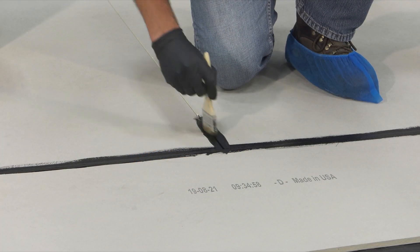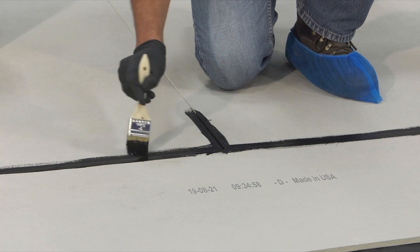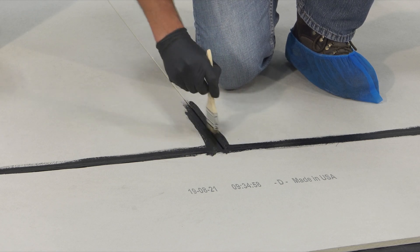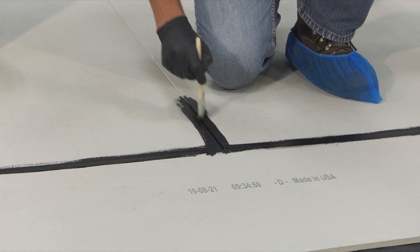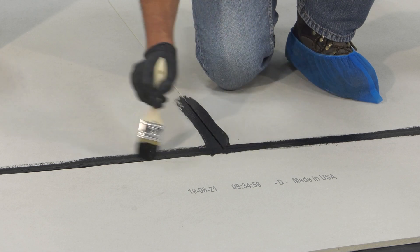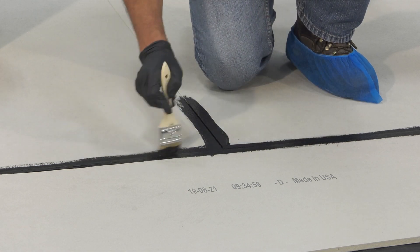For True Ground to work properly, it must be continuous across all insulation or cover board joints. To accomplish this, True Ground should first be applied to all board joints and T-joints using a paint brush.